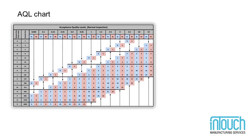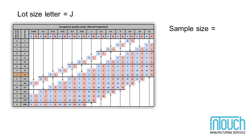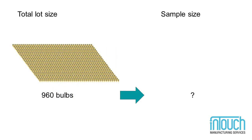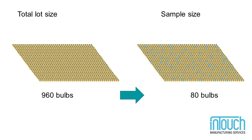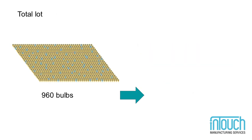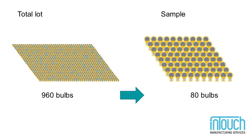Now, let's turn to the reverse side of the AQL chart. Find your lot size letter J among the lists shown on the left. You can see that the sample size corresponding to J is 80 pieces — so out of your total lot size of 960 bulbs, you'll want to pull a random sample of 80 bulbs to inspect. And remember, you'll want to pull samples from different parts of the lot. If the finished bulbs are packed in cartons, be sure to pull samples at random from multiple cartons at the front, rear, top, and bottom of the lot — otherwise, you might skew the results of your inspection.